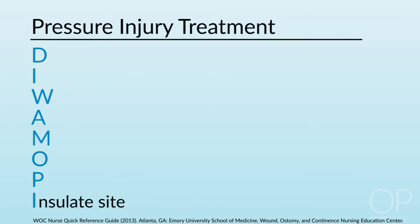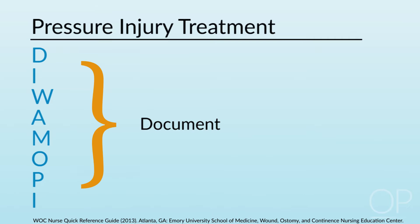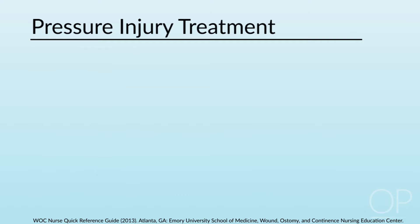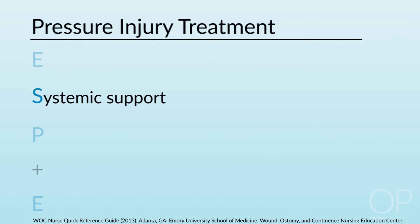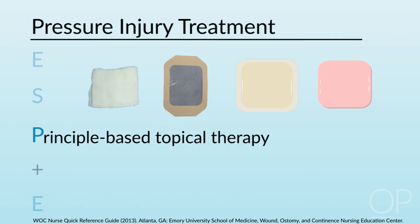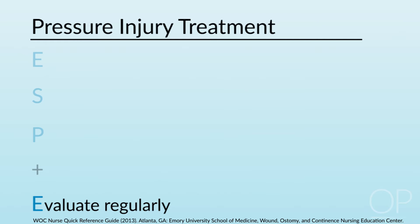Once you have finished all of this, you want to make a clear documentation of what you've seen so the next person who comes along can make the same assessment that you did. Once you realize that you have a problem with a pressure injury, you need to be very proactive about treating it using the ESP plus E principles. Prevention is most important, but if a wound does develop, you need to think about correcting etiological factors — is there some reason why this patient got this? Then think about systemic support: if the patient has poor nutrition, do what you can to maximize nutrition. Then use principle-based topical therapy. You may have limited resources, but we will go over how to keep a wound bed moist, how to debride a wound, and how to get it to granulate in. After you've done the care, continue to evaluate wounds regularly to assure that they are progressing.